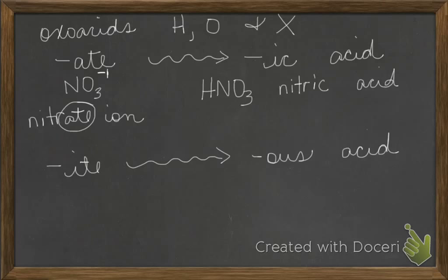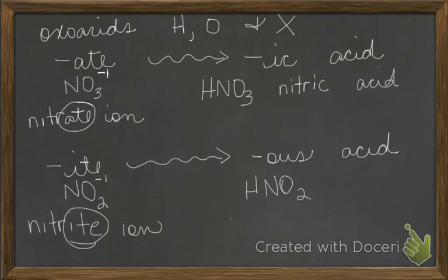The same thing would happen with ite. What does nitrite look like? The nitrite ion is NO2 with a minus one charge. If you put an H with it, that would be HNO2. Ite becomes ous, so this is nitrous acid.